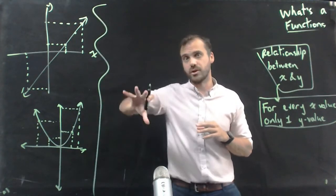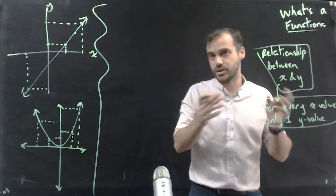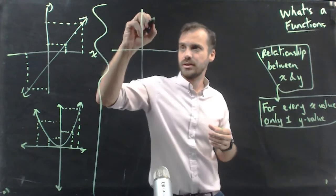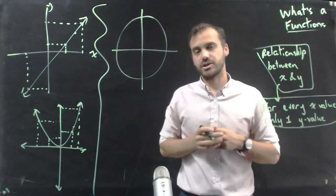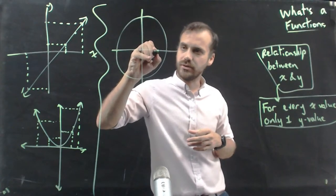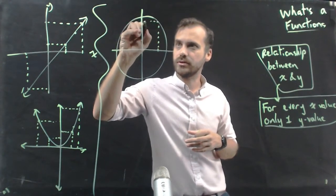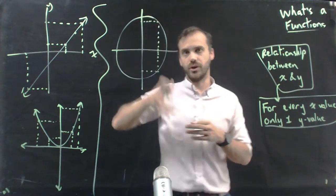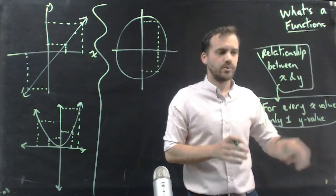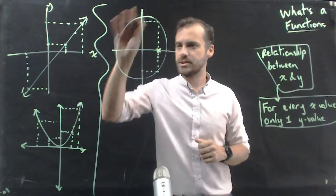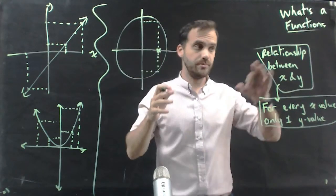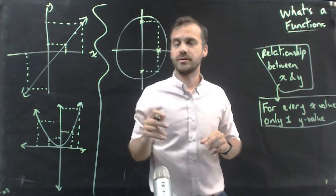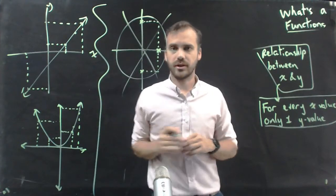But not everything that appears on a Cartesian plane is a function. For instance, you've been looking at unit circles. This is a circle appearing on a Cartesian plane. For this x-value, there is a y-value, but there is also another y-value. For every x-value, only one y-value — well, for this x-value, this particular relationship between x and y has two y-values. Not a function.